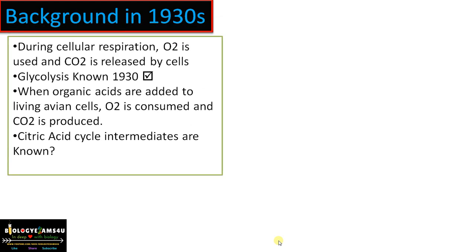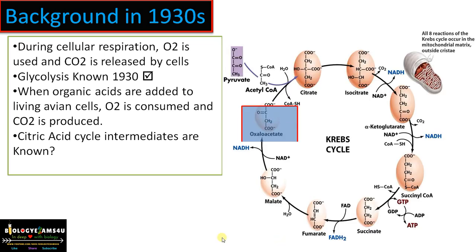What was the knowledge about cellular respiration in the 1930s? It was known that during cellular respiration, oxygen is used and carbon dioxide is released, and the process is responsible for synthesizing energy or ATP that drives all activities of the cell. Glycolysis was known by 1930, but the citric acid cycle and this part were not known.